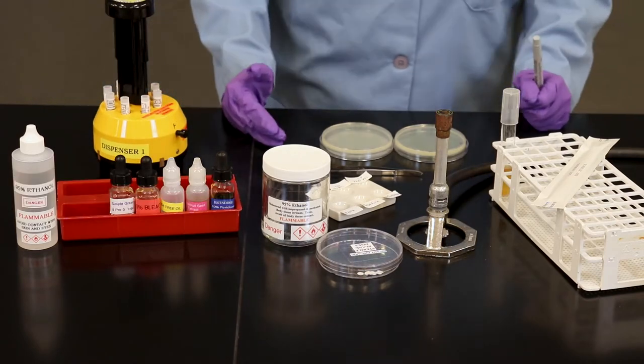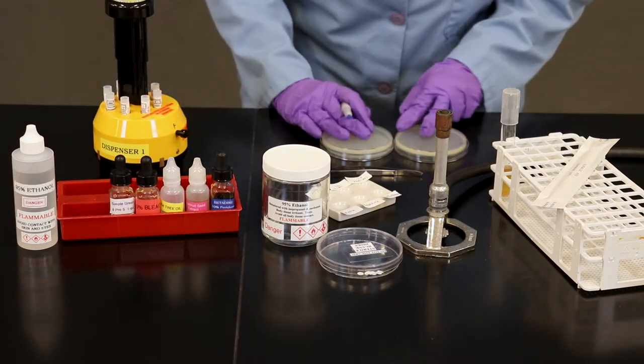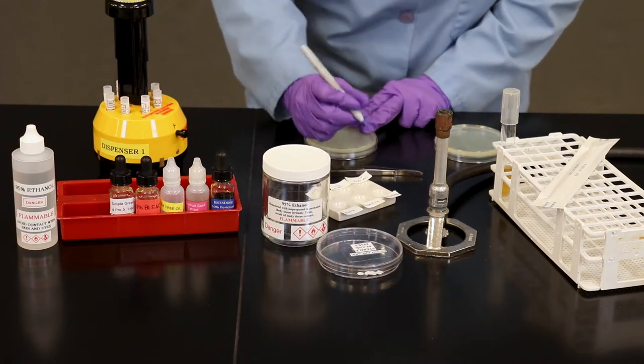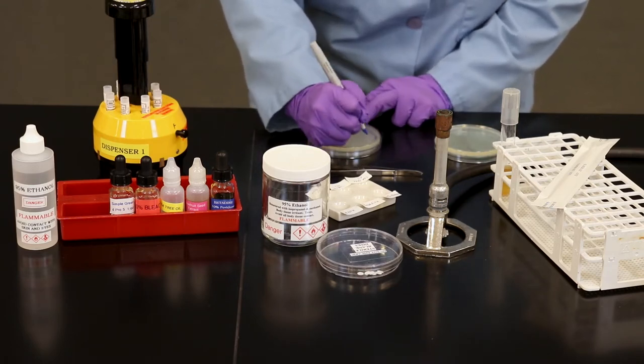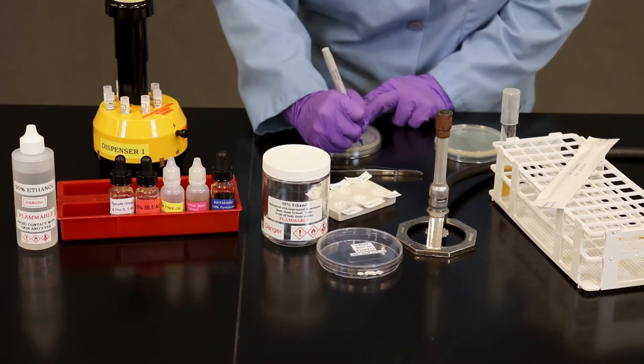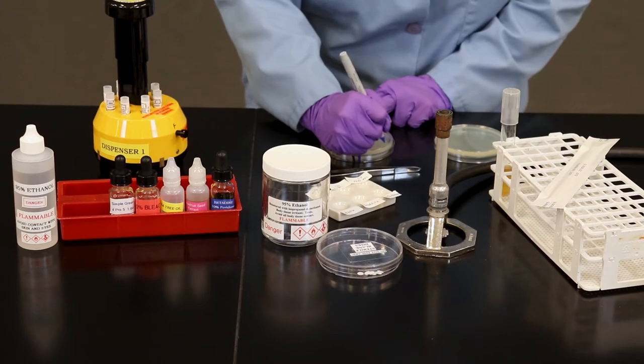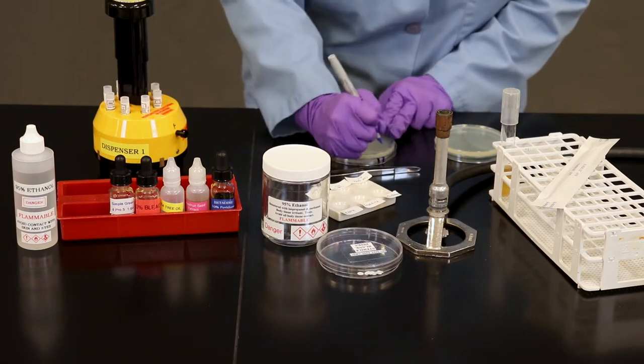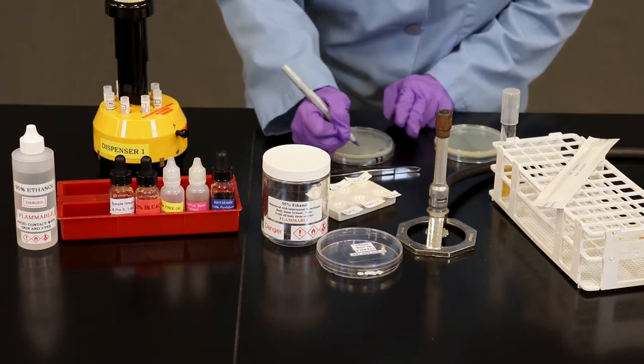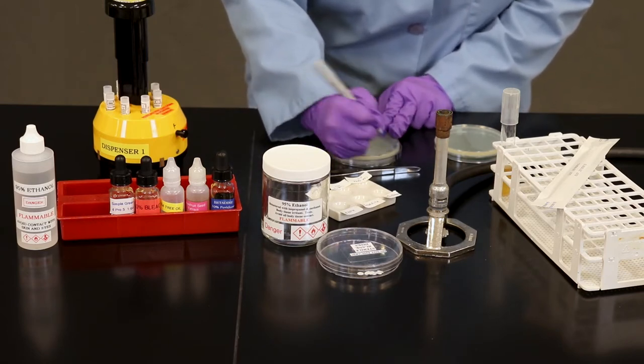Before you get started, you should label your petri plates. On one plate, we're going to note chemical disinfectants. We're going to note Mueller-Hinton Agar, or MHA for short. My initials, the date.